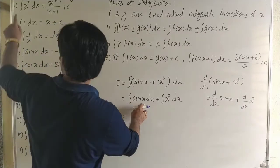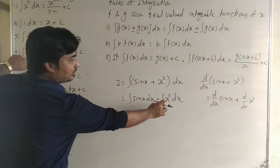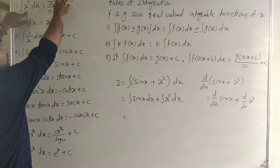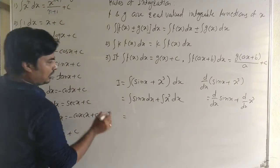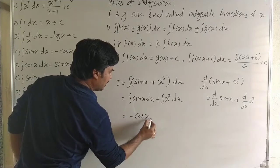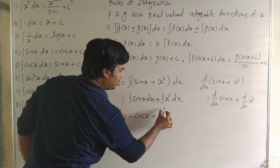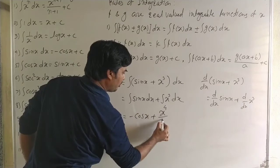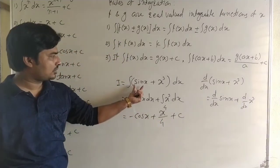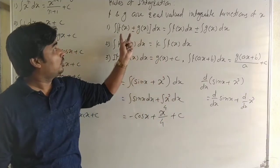In the derivative of sin x + x³, we separate: derivative of sin x plus derivative of x³. For the integral, the same procedure applies: integral of sin x plus integral of x³. The integral of sin x is −cos x, and the integral of x³ using x^(n+1)/(n+1) gives x⁴/4, so the answer is −cos x + x⁴/4 + C.